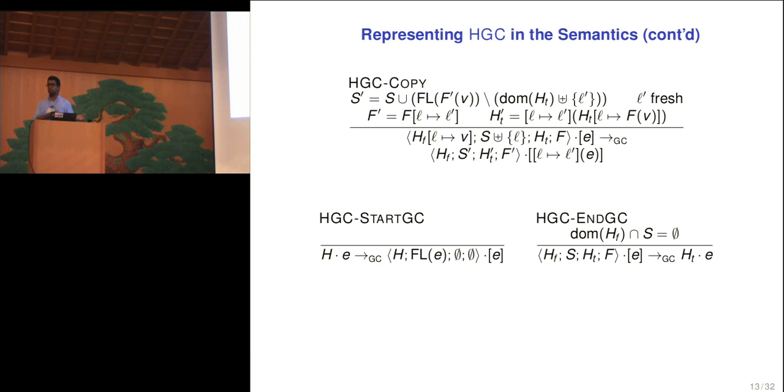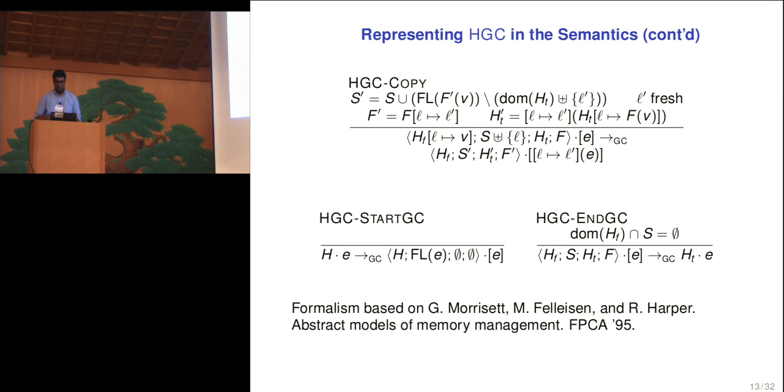So this is a single step of copy collection. It copies a single location, and a complete collection would involve multiple of these steps until some kind of terminating condition. And it starts with some kind of start condition. So we model these as these two rules, startGC and endGC. StartGC is very simple. All it does is it locks the expression E so that it cannot evaluate any further while collection is in progress. And it sets the scan set to be the free locations in E. This corresponds to the root set in typical garbage collection vocabulary. Garbage collection then ends when there are no locations in the scan set that are also in the from heap. This is slightly different from regular copy collection, where you simply continue until the scan set is completely empty. However, since we have hierarchical heaps, multiple heaps, there could be locations in S that do not live in the from heap, and therefore are not subject to the collection. So the end rule needs to be refined into making sure that it's no locations that are in the from heap, in scope of collection, that remain. Before I move on, I just want to point out that this method of formalizing the collector is based on Morissette, Felison, and Harper's work in abstract models of memory management.